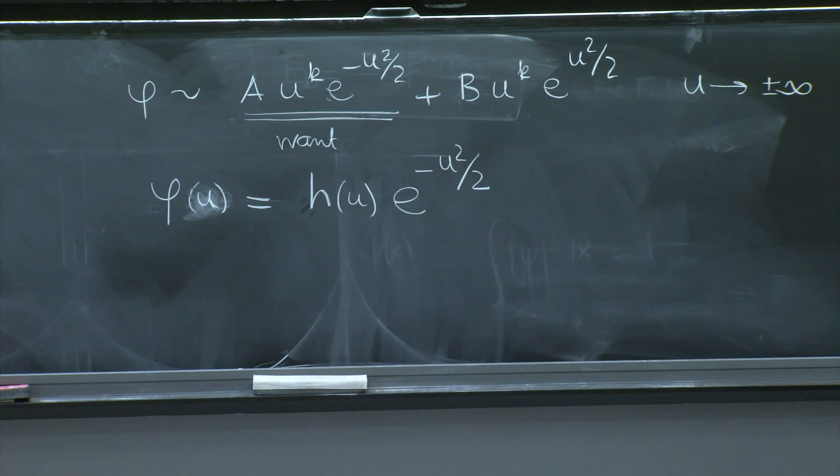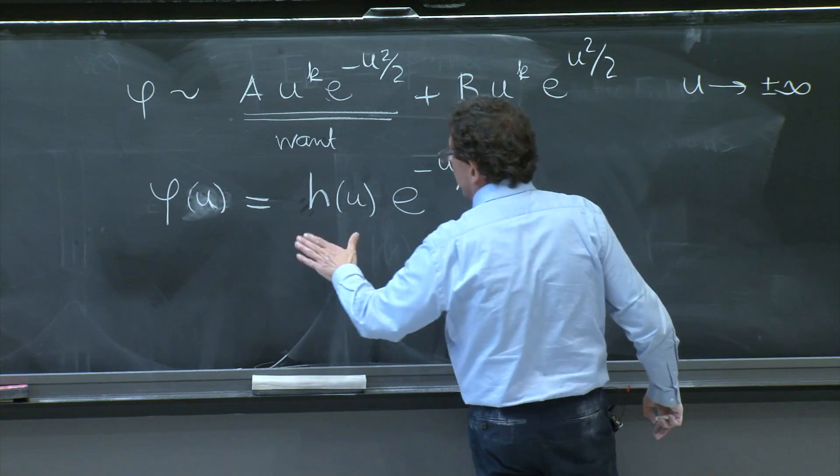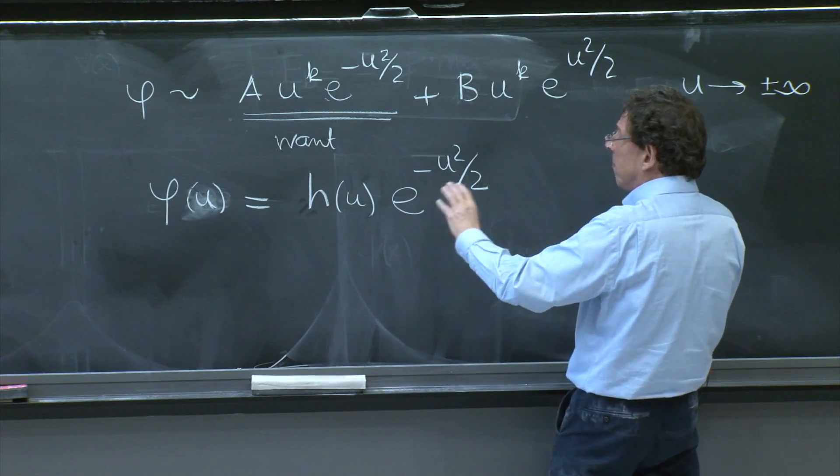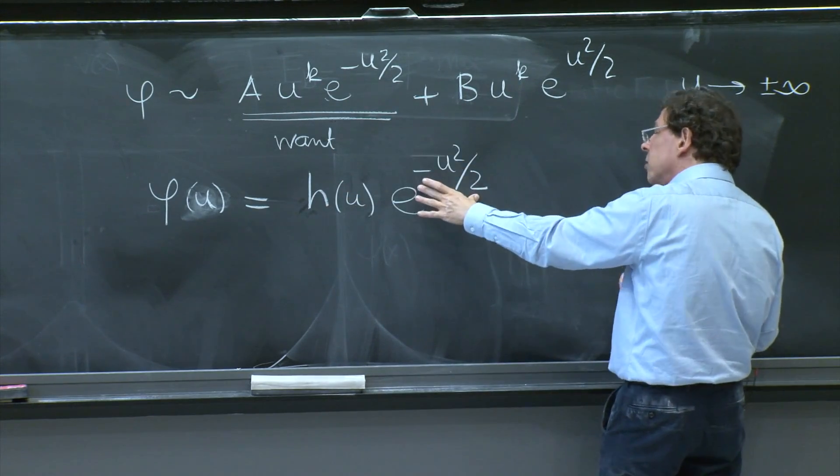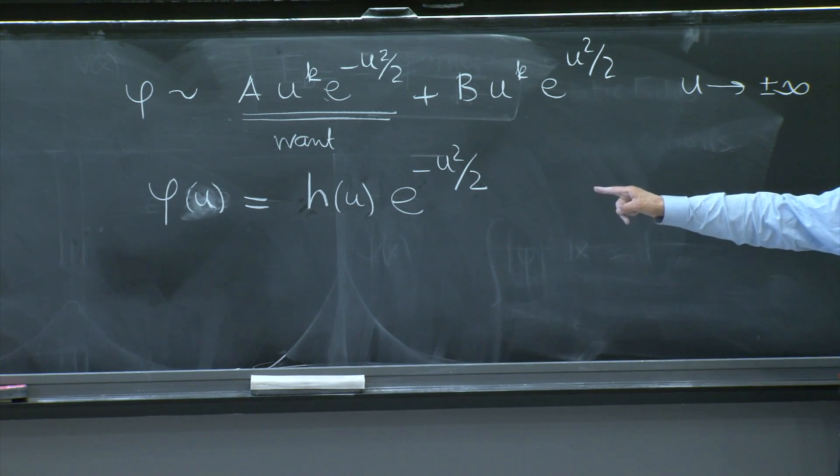So it's an ansatz. But it's without any loss of generality, because you can always write any function as another function times e to the minus u squared over 2, because you take the function, you multiply by e to the plus u squared over 2, and e to the minus u squared over 2, and it's written like that.